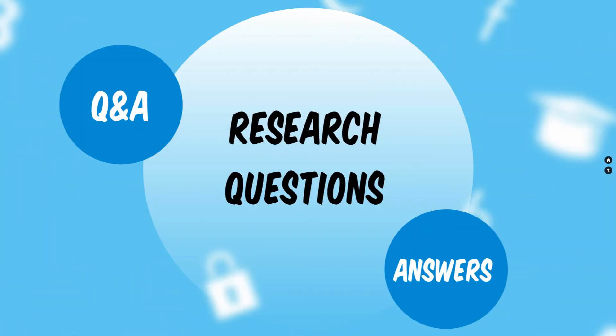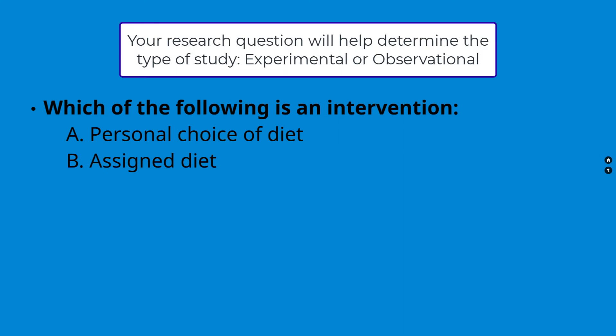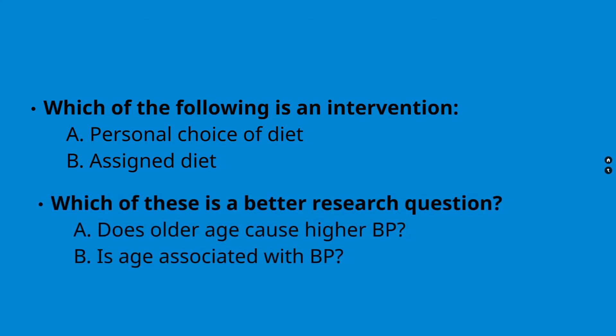Developing and defining research questions is a critical part of public health. We need a well-defined question before we can collect or use data to answer it. Which of the following is an intervention: personal choice of diet or assigned diet? Which of these is a better research question: does older age cause higher BP, or is age associated with blood pressure?